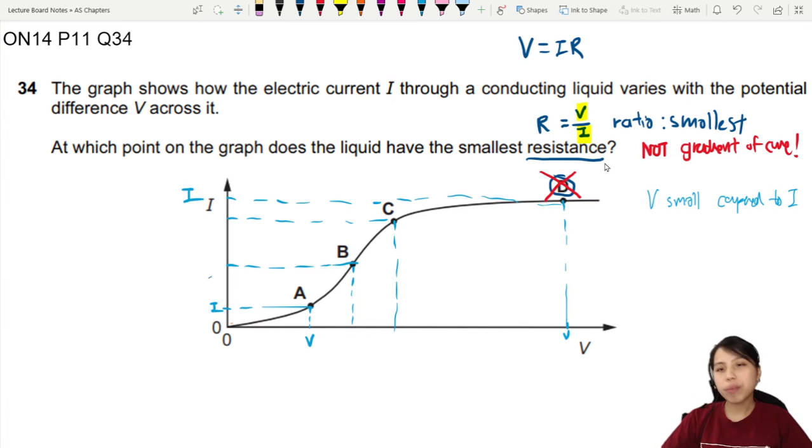But there's one problem with using this method. We don't have values, we have to eyeball and make a guess. Which V is quite small compared to the I? Like, doesn't look like D, because D, look at the V so big, but the I is so small. So not D. A, B, C, how do we know? So this method works well if you have values, but we don't.